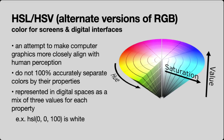HSL or HSV is an alternate version of RGB for screens and digital interfaces — an attempt to make computer graphics more closely aligned with human perception. It doesn't 100% accurately separate colors by their properties or perfectly replicate hue, chroma, and value, but it's closer and can be quite useful when creating effects in a digital experience that replicate human vision. It's represented as three values; for example, HSL 0, 0, 100 is white — no hue, no saturation, and lightness maxed out.